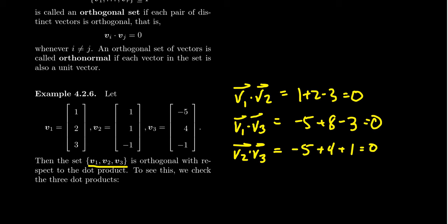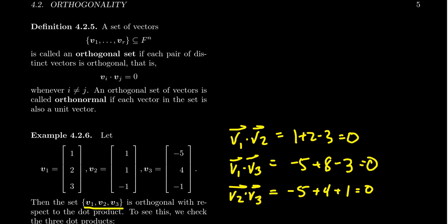If any pair were not zero, those two vectors would not be orthogonal, and hence the whole set would not be orthogonal. One important caveat: when we define orthogonal sets, we actually require that this be a non-zero set of vectors. The zero vector is orthogonal to everything, which makes it quite exceptional. As such, we have to remove the zero vector from consideration when we talk about orthogonal sets, because including it would cause problems we'll see in a moment.